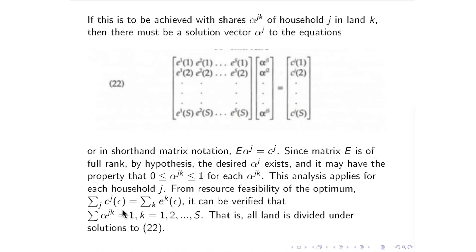All the land of each type K is totally divided among all the households. You could run into a problem if the alphas went negative — that's like going short, which we don't allow. So there's a slight complication. But roughly speaking, there's a way to achieve optimal risk-sharing just by shares — they don't need to transfer risk around ex-post; they can do it all ex-ante. To do this we had to assume as many land types as states of the world, and the number of negative-alpha constraints has to be non-binding.